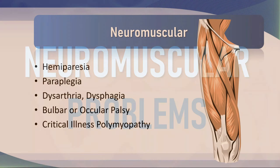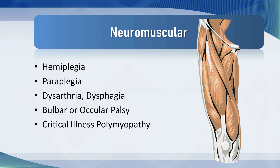Neuromuscular problems. It's really important in the ICU that you identify if the patient has a problem moving their limbs or with their speech. If you identify a neuromuscular problem, you must present it so that it's not forgotten, particularly if the patient has been deeply sedated. For example: hemiplegia, paraplegia, difficulty speaking, difficulty swallowing, palsy of their bulbar muscles or ocular palsy, and particularly critical illness polymyopathy. If the patient is very weak and they have sluggish reflexes and poor tone, they have a polymyopathy — and that will delay recovery from critical illness and may slow down liberation from mechanical ventilation.